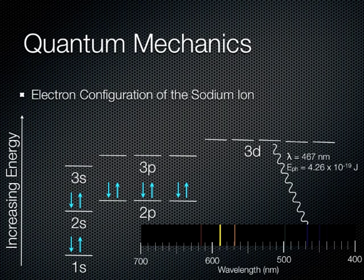Using the formulas for light, the energy of this photon is equal to 4.26 times 10 to the negative 19th joules. The energy of the emitted photon is equal to the energy of the electron transition, and therefore, the energy of the electron transition is equal to 4.26 times 10 to the negative 19th joules.